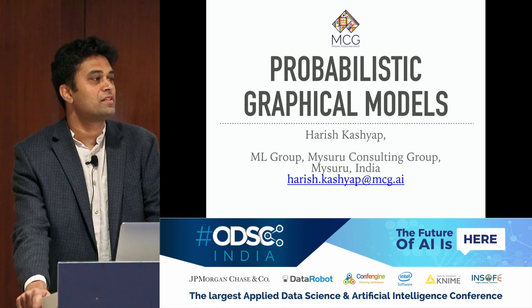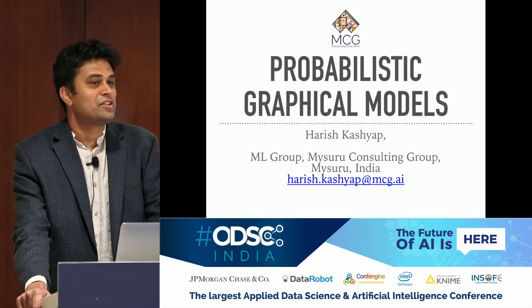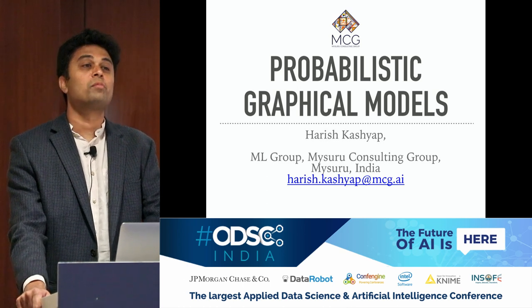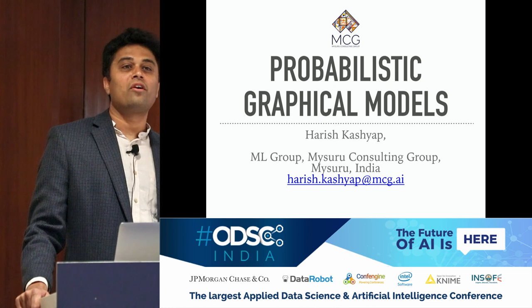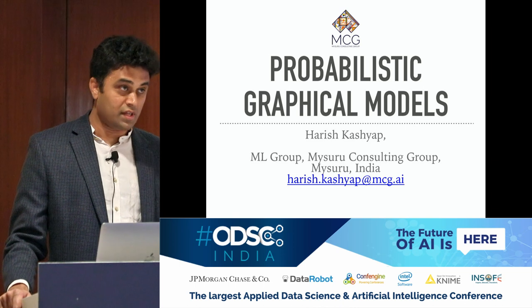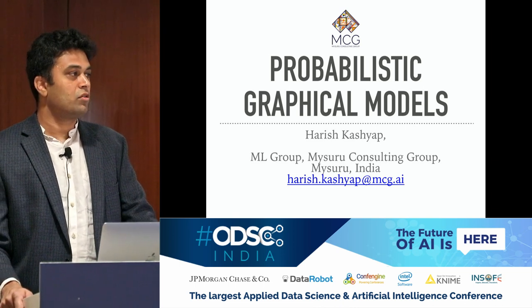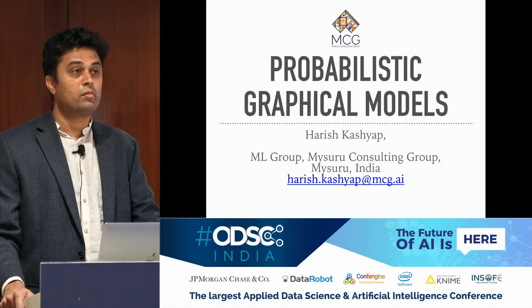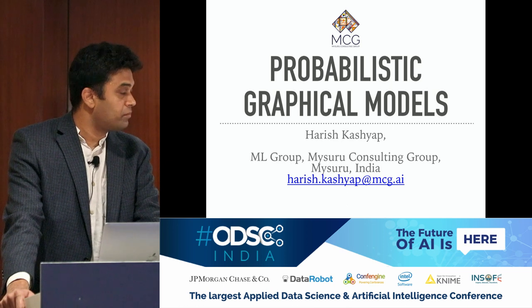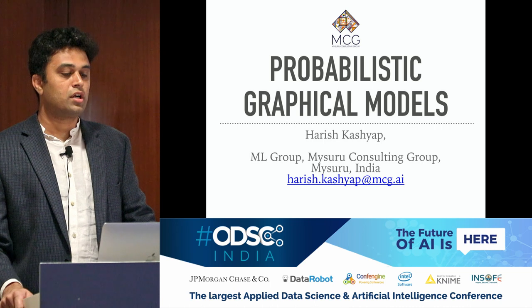Data science itself is a definition that is getting standardized over the years. What we are going to present is something on machine learning, specifically on probabilistic machine learning — not deep learning. Can deep learning work with this? Yes, it can. But it is not going to be in the same paradigm as a neural network. So let's see what probabilistic graphical models are. Before that, a short introduction of why we are doing this at Mysore Consulting Group.